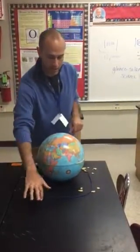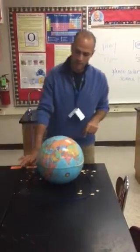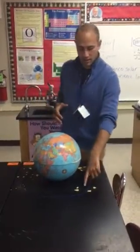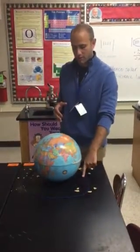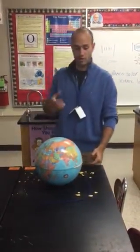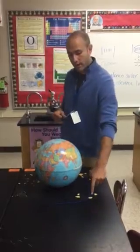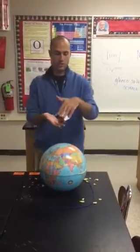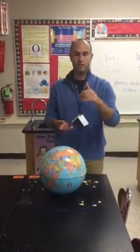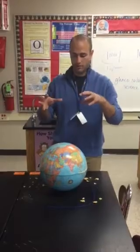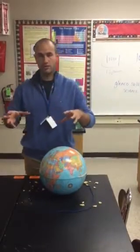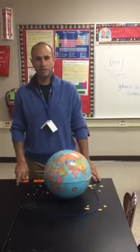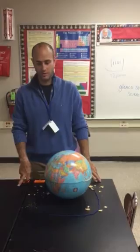If everything spun at the same speed, you would just see one giant ring. But because the inside portion spins a little bit faster — it's closer to the planet, so stronger gravity — and the outside portion spins a little bit slower, you actually get to see the distinct layers of the rings. And that is how the Roche Limit causes rings on Saturn.